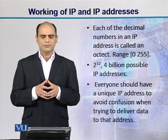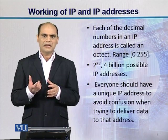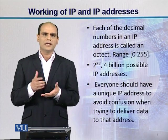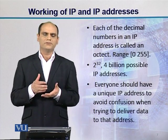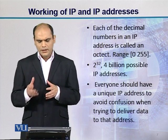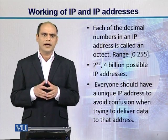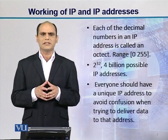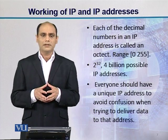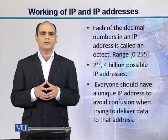Each of the decimal numbers in an IP address is called an octet — it is an 8-bit number. What is its range? From 0 to 255, meaning 256 combinations are possible: 2 raised to the power 8. If you consider 32 bits, how many unique IP addresses can be generated? 2 raised to the power 32, which is 4 billion possible IP addresses that can be generated uniquely.